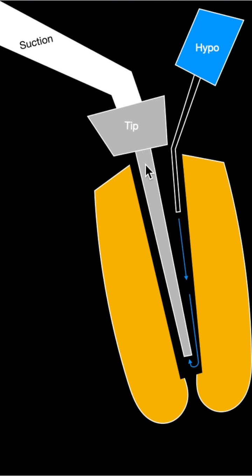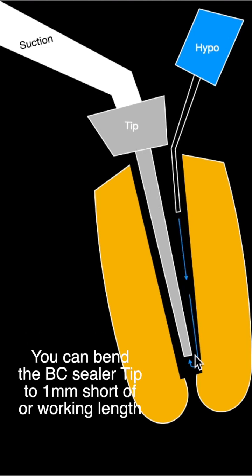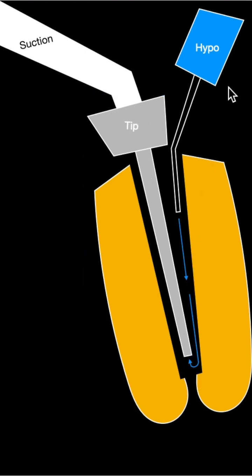What that does is that suctioning effect or negative pressure pulls the irrigant down to the apical portion and back up the suction. Lots of volume and certainly a lot safer than positive pressure.